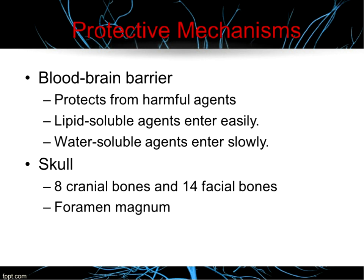The brain has protective mechanisms. The blood-brain barrier is a physiologic barrier between blood capillaries and brain tissue that protects the brain from harmful agents while allowing nutrients to enter. Lipid-soluble agents are much more successful at passing through the blood-brain barrier. The skull also provides protection — there are eight cranial bones and 14 facial bones. The foramen magnum is the largest opening, through which the brain stem extends down into the spinal cord. It offers the only major space for expansion of brain contents under increased intracranial pressure — but we don't want that to happen, because that is herniation.